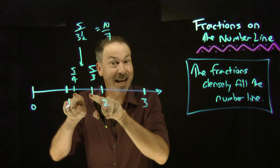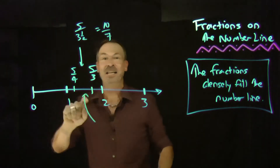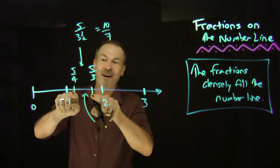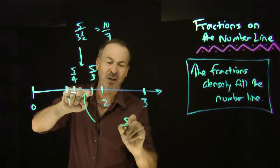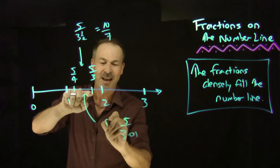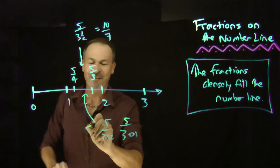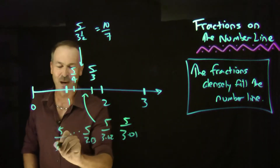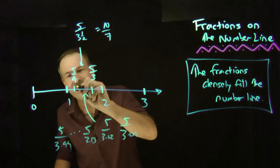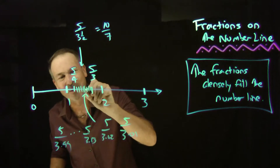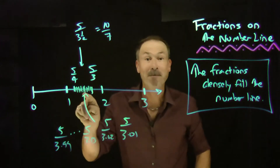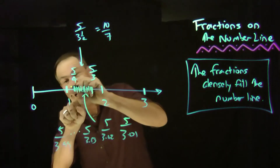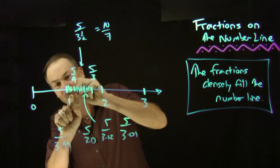In fact, I could put 99 fractions between any two given fractions on the number line. For example, between 5 fourths and 5 thirds, I could put the fractions 5/3.01, 5/3.02, 5/3.03, all the way down to 5/3.99 — 99 fractions in between those two. In fact, I could put a million fractions between any two given fractions on the number line. I could put a million in between these ones.